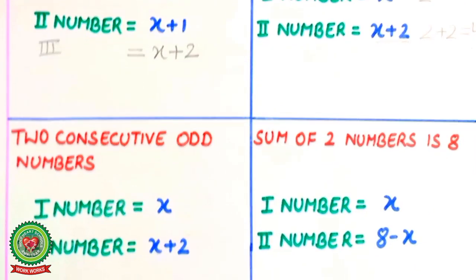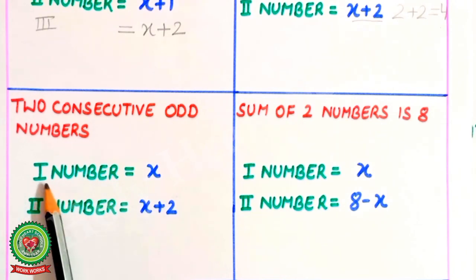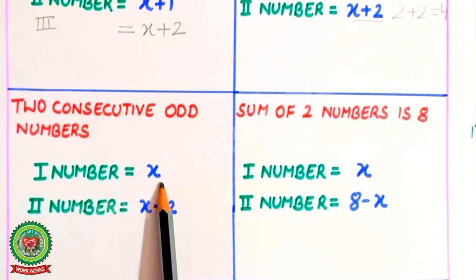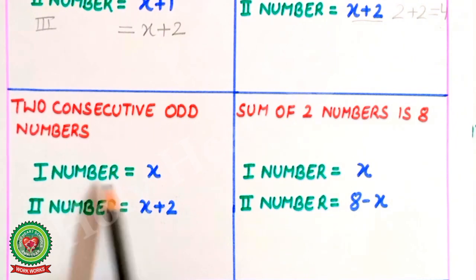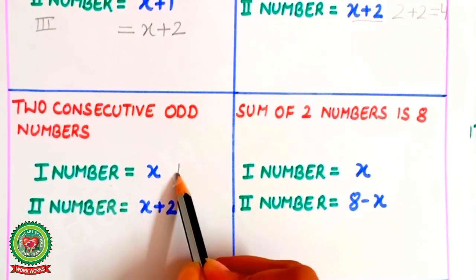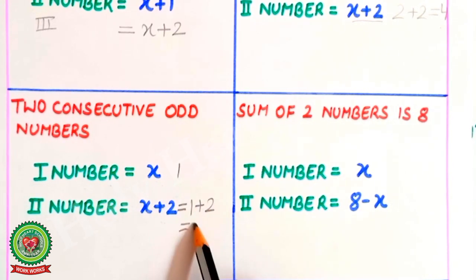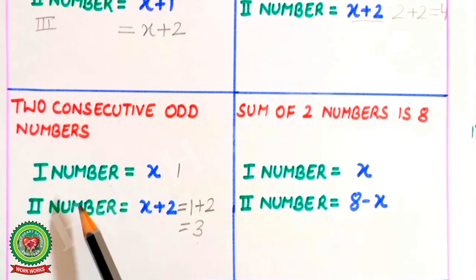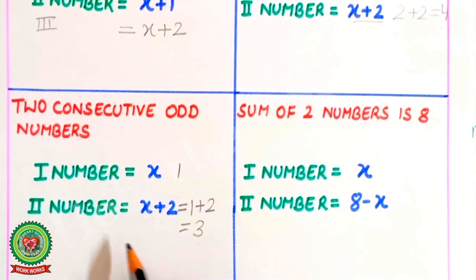For two consecutive odd numbers, if the first number is x, the second number is also x plus 2, same as even numbers. For example, if the value of x is 1, then 1 plus 2 equals 3, which is also an odd number. So the two numbers are x and x plus 2. If a third odd number is needed, the next number is x plus 4.